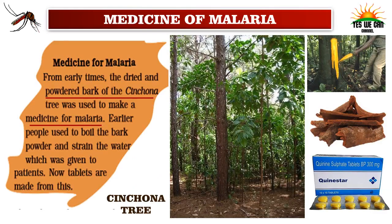When the blood test confirms that a person is suffering from malaria, he is given medicine for malaria. From early times, the dried and powdered bark of the cinchona tree was used to make malaria medicine. People used to boil the bark powder and strain the water to give to patients. Now, tablets are made from this. This is the cinchona tree, its bark dried, and these are the tablets.